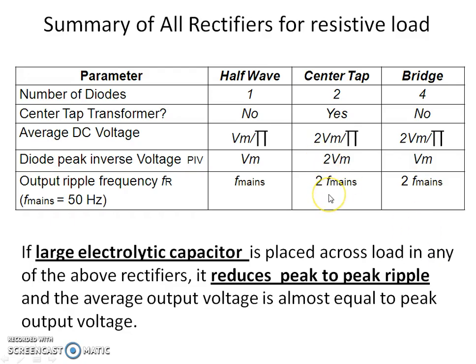A summary of all rectifier types for resistive loads is presented. It is noted that using a large electrolytic capacitor significantly reduces the peak-to-peak ripple voltage.